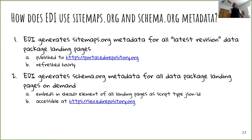EDI generates the schema.org metadata for all our data package landing pages on demand. When a user or search engine goes to that landing page, it looks up the metadata, creates the JSON-LD, and presents it back to that search engine or user. The user generally doesn't see this because the metadata is embedded in the head element of the landing page — unless you actually view source from your HTML page, it's completely transparent to you. We generate all our schema.org and sitemaps.org metadata on a server called seo.edirepository.org.